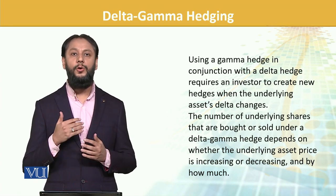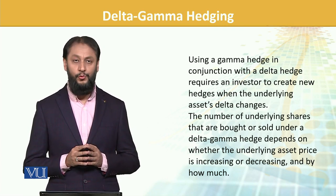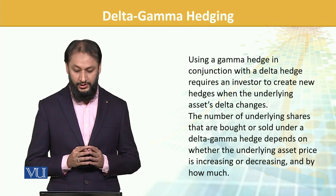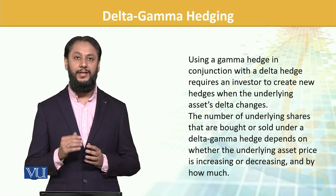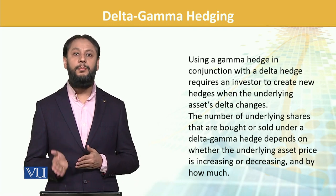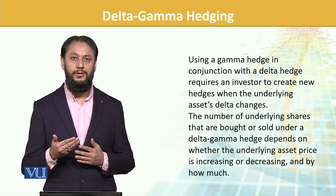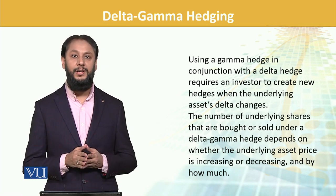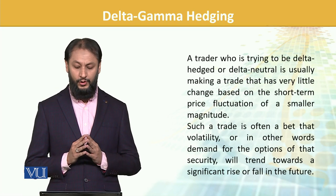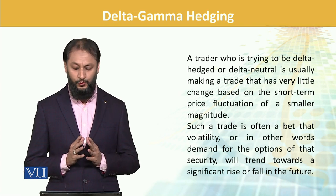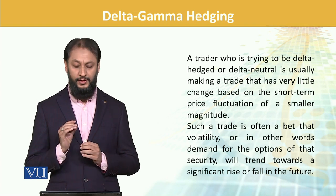If there is a significant change, adjustments are made in order to remain intact. The number of underlying shares that are bought or sold under Delta-Gamma hedging depends on whether the underlying asset is increasing or decreasing and by how much. A trader who is trying to be delta-neutral is usually making a trade based on short-term price fluctuation of a smaller magnitude.